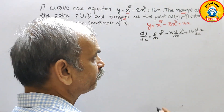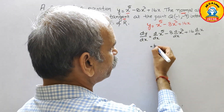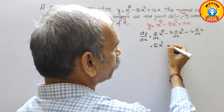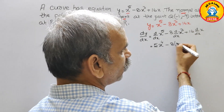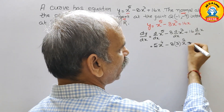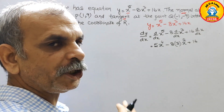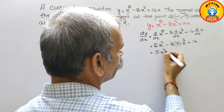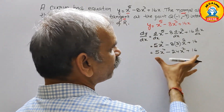Now differentiate each term. The first term is in the form xⁿ, so it gives 5x⁴. Then minus 8 times the derivative of x³, which is 3x², giving -24x². And 16 times the derivative of x is 16. So dy/dx = 5x⁴ - 24x² + 16. This is our differentiation.